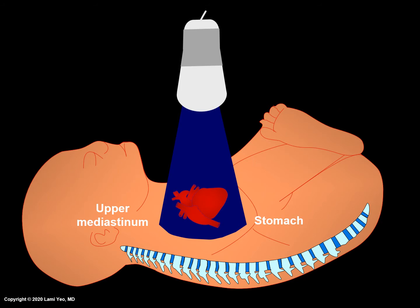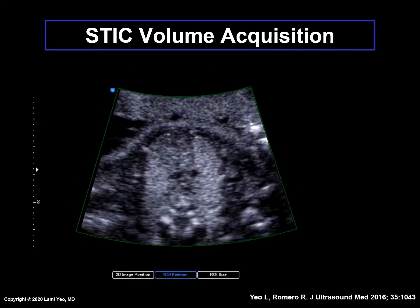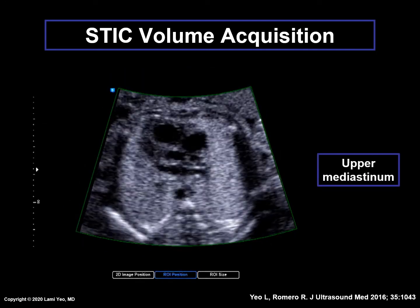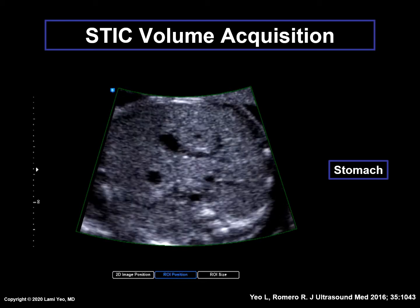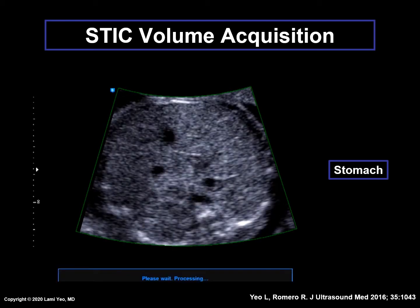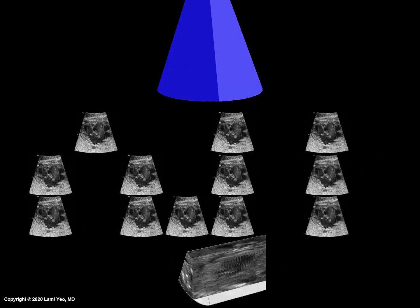With the four-chamber view as the acquisition plane and applying appropriate settings, the volumetric ultrasound probe should automatically sweep from the fetal upper mediastinum down to the stomach. Here is an example of a STIC volume being acquired — it sweeps from the upper mediastinum through the four-chamber view and then down to the fetal stomach. When completed, the STIC volume display comprises thousands of 2D images acquired through the areas of interest during the single automated sweep. B-mode images are arranged in order according to their spatial and temporal domains, hence the term spatial-temporal image correlation.